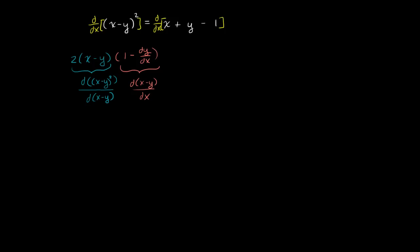Now on the right-hand side, the derivative of x with respect to x is 1. The derivative of y with respect to x we write as dy/dx. And the derivative of a constant with respect to x is just 0.